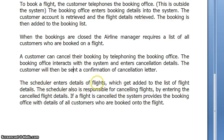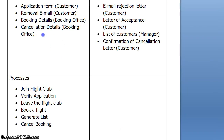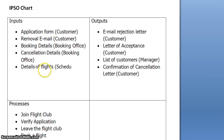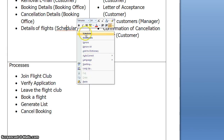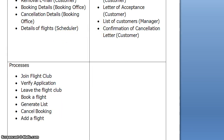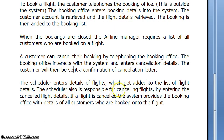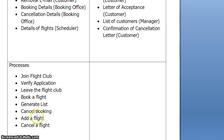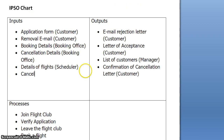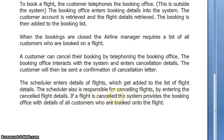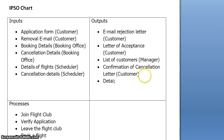The scheduler enters details of flights which get added to the list of flights. So we've got input: details of flights, from the scheduler, and the process is: add a flight. The scheduler is also responsible for cancelling flights by entering cancelled flight details — so: cancel flight, and they enter cancellation details. If a flight is cancelled, the system provides the booking office with details of all customers who are booked onto the flight. So that's an output: details of customers booked onto flights, and that goes to the booking office.